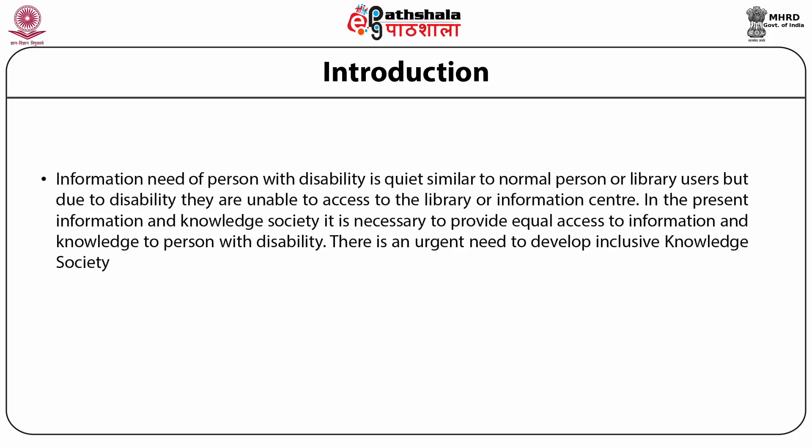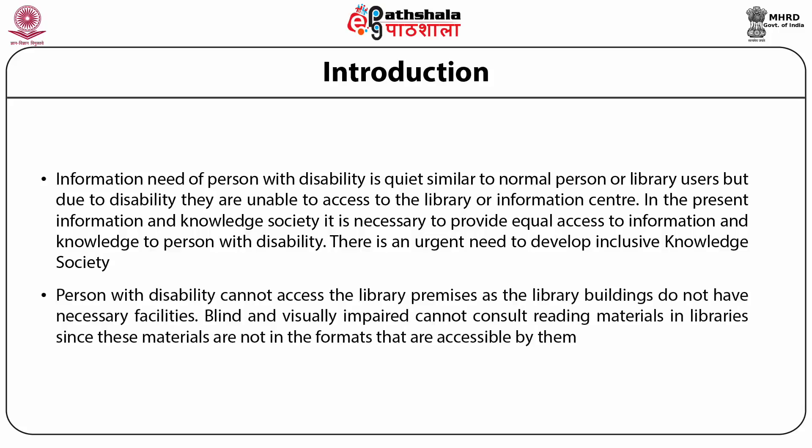Now let us see what is the information need of persons with disability. The information need of persons with disability is quite similar to normal persons or library users. But due to disability, they are unable to access the library or information center. In the present information and knowledge society, it is necessary to provide equal access to information and knowledge to persons with disabilities. There is an urgent need to develop an inclusive knowledge society. Persons with disability cannot access the library premises as library buildings do not have necessary facilities. Blind and visually impaired cannot consult reading materials in libraries since these materials are not in a format accessible by them.